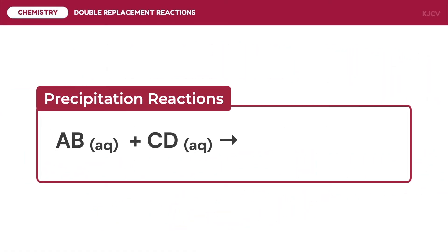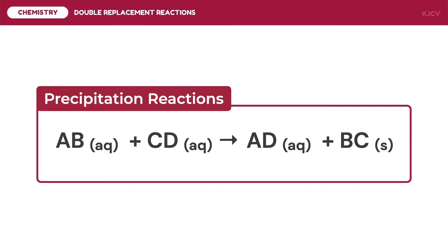Precipitation reactions occur when two aqueous compounds react to form two different compounds: one aqueous compound and one solid compound, which is called a precipitate. To determine which product of a double replacement reaction will exist as a precipitate, solubility rules will be followed.